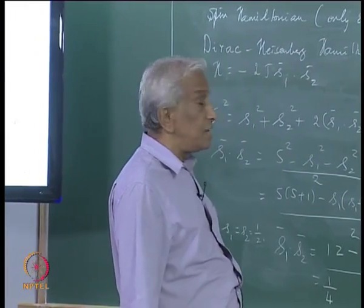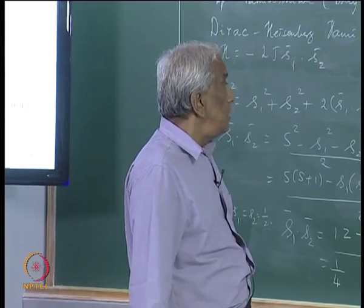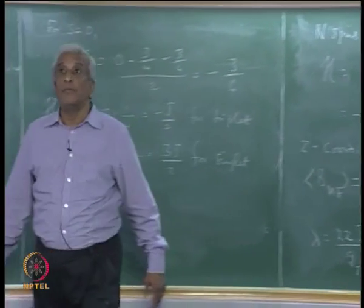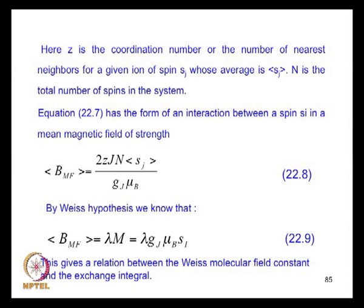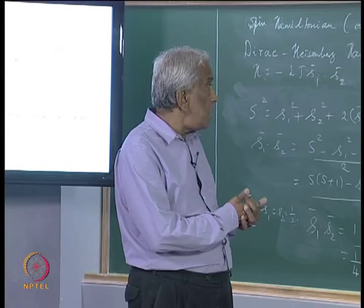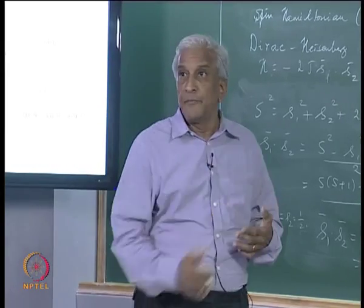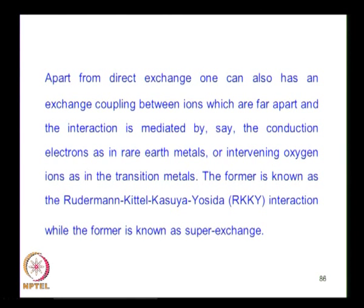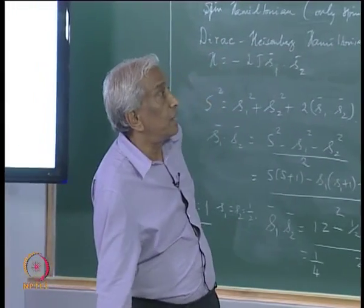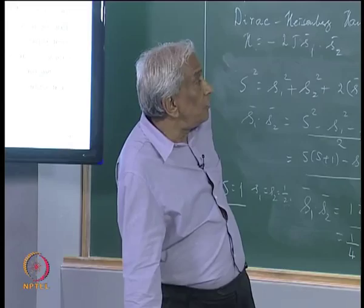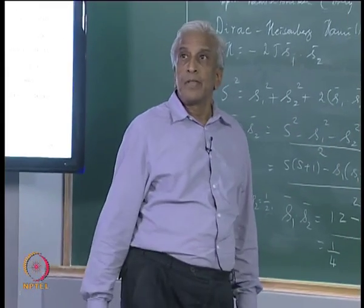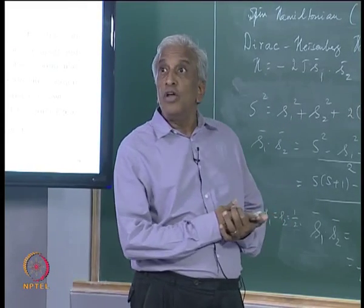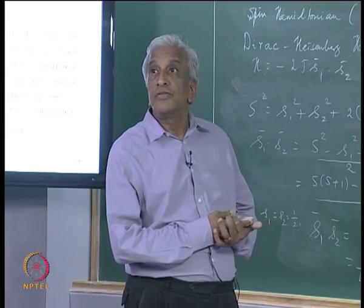We are now in a position to relate the Dirac-Heisenberg exchange spin Hamiltonian and the mean-field hypothesis, enabling us to obtain an expression for the relation between the Weiss molecular field constant λ and the exchange integral J. We now have a microscopic understanding of ferromagnetic or antiferromagnetic ordering in terms of the exchange interaction — a purely quantum mechanical interaction based on electrostatic interactions of the electrons.